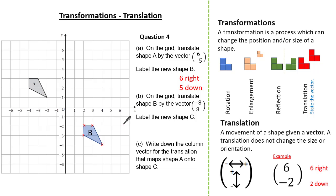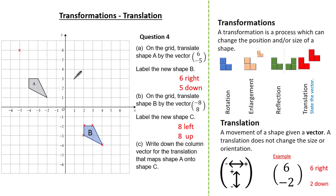Now we use shape B and translate it by the vector minus 8, 8, which means 8 to the left and 8 up. Choosing each corner at a time, we count 8 to the left and 8 up. We do this carefully for each vertex — 8 to the left and then 8 up — until we plot all the new vertices. We do this for every other vertex until we can see our shape being formed, and this is what we label as shape C.